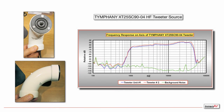The sound source used is a tweeter made by Timpani. I've mounted it conveniently in a 90-degree piece of PVC pipe to make it practical to position as a sound source. The bandwidth of this tweeter is pretty much uniform between 1,000 hertz and a little over 40,000 hertz. The green curve in the measurement plots represents background noise, confirming the signal measured is that of the actual speaker and not background noise.